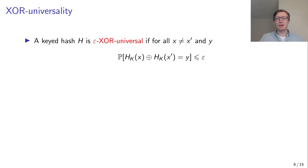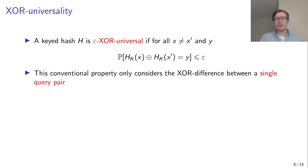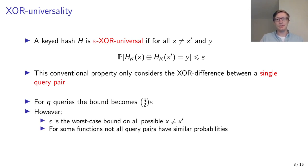Now I will discuss the security model of the double-deckers. A very commonly used security property of keyed hash functions is the notion of epsilon XR-universality. This property means that the probability of getting a specific difference between outputs is small — specifically, the probability of getting a difference Y must be at most some small epsilon. However, this property only considers the difference between a single query pair, so for Q queries the bound simply becomes Q-choose-2 times epsilon. But epsilon is the worst-case bound over all query pairs, so for some functions this bound can be a very bad estimate.